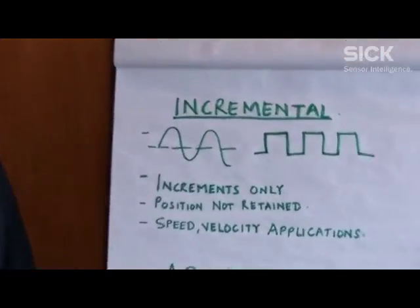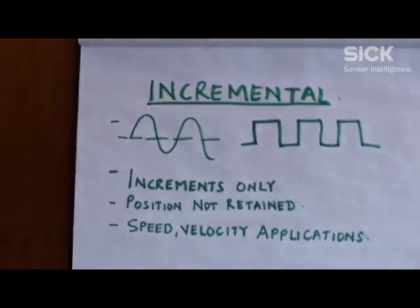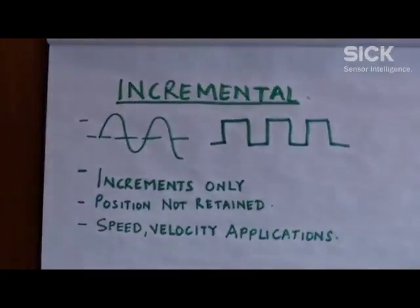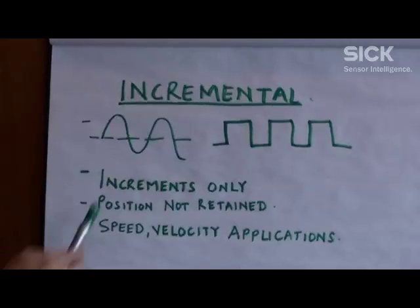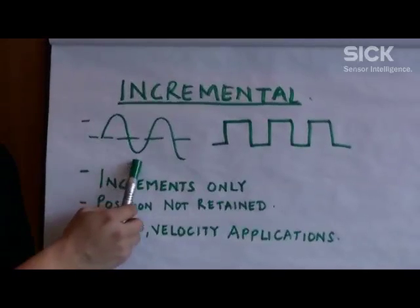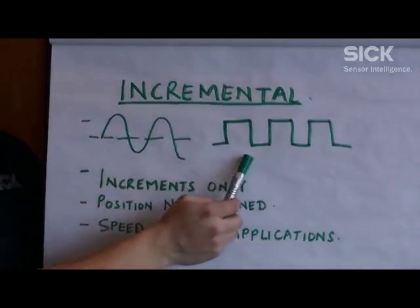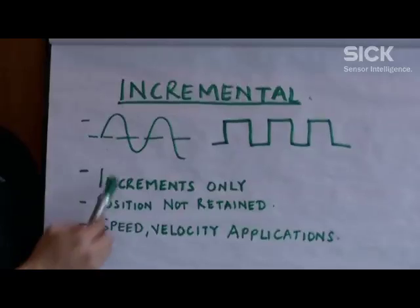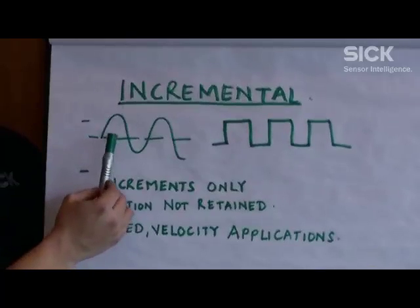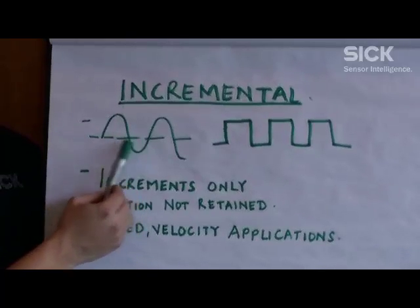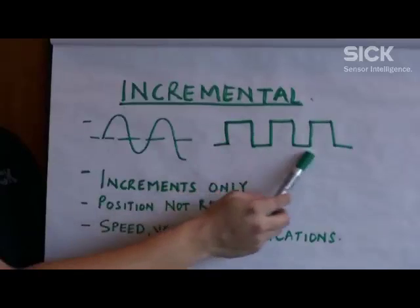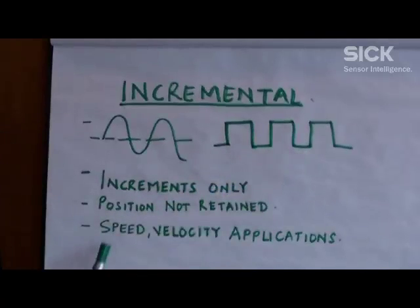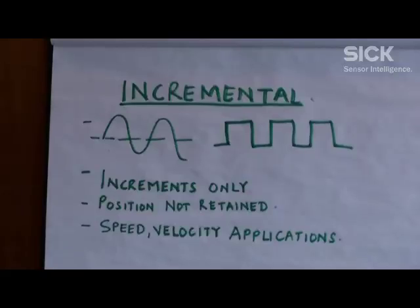For the incremental encoders we provide, you can get either a sine/cosine waveform or a square wave, and you can count either the number of periods for sine/cosine or count the number of pulses to get speed or velocity as the information.